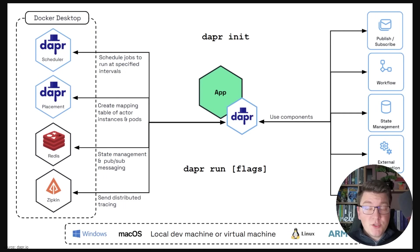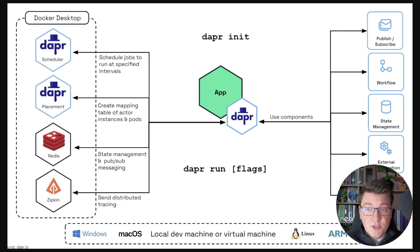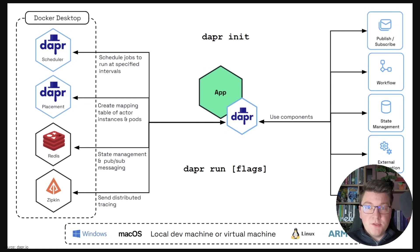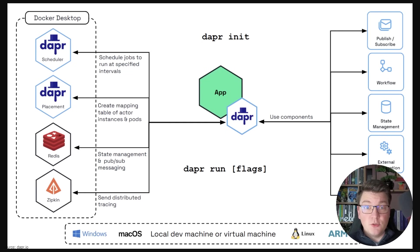DAPR works using the sidecar pattern, where it runs as a container next to your application container. There are also some runtime components that you need to run separately. The base components are represented by the scheduler, the placement container, a Redis instance, and a Zipkin instance for consuming distributed traces.